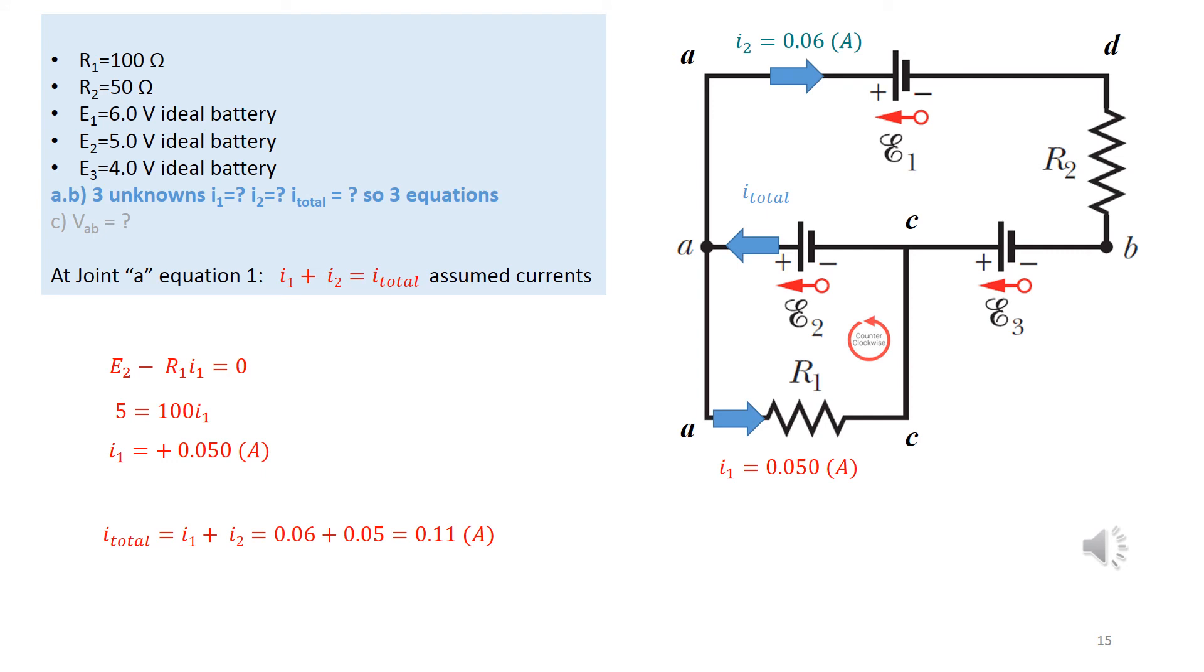Now, let's repeat the work in the lower loop. We take it counterclockwise and we are trying to take it with the EMF. So it will be plus E2 minus R1 I1 equals zero. The result is positive. So the assumed direction is correct. And finally, if you want to find the I total, it would be I1 plus I2, which is 0.11 ampere.